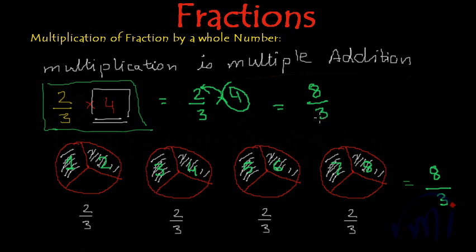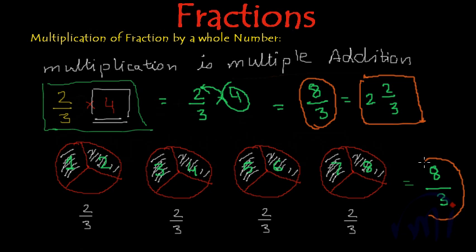And now since this 8 by 3 is an improper fraction, this can be converted into mixed fraction, and we will get 2 and 2/3. So this will be the result in the form of mixed fraction; otherwise this is the result if you are allowed to write in improper fraction format.